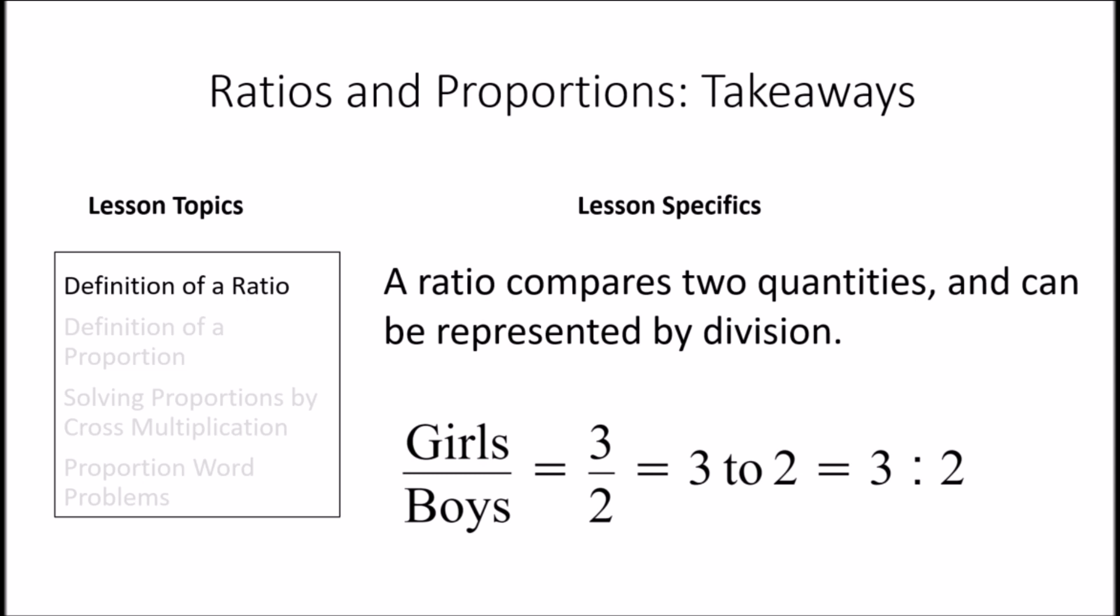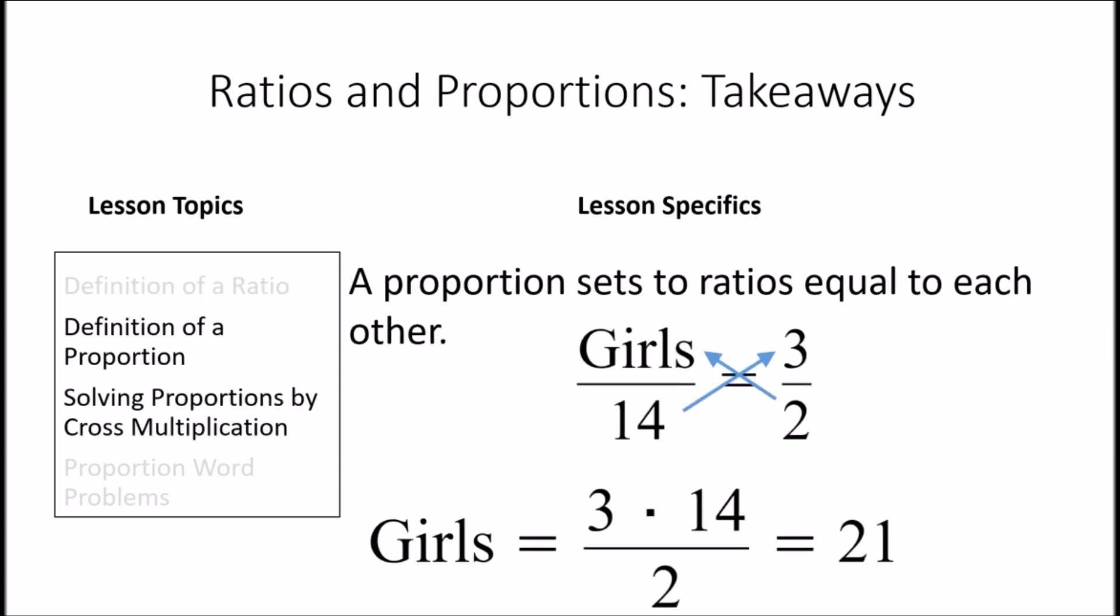Let's do a recap of our ratios and proportions lesson. We learned that ratios give us the relative amounts of different quantities. For example, the ratio shown here tells us that for every three girls we have in a classroom, there are two boys in that classroom. We also learned that proportions are equations where two ratios are set equal to each other, and that they can be solved through cross multiplication.